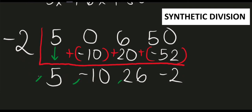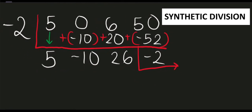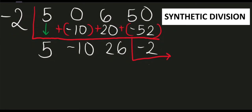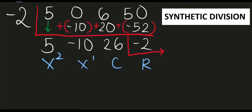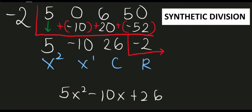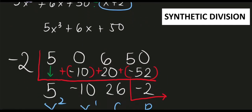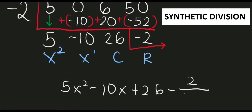Since the last number is negative 2, it serves as our remainder. Assigning names — constant, first degree, second degree — the final answer is 5x squared minus 10x plus 26. Since the remainder is negative 2, we include minus 2 over our original divisor x plus 2. Final answer: 5x squared minus 10x plus 26 minus 2 over (x plus 2).